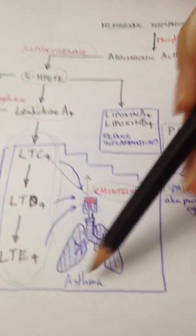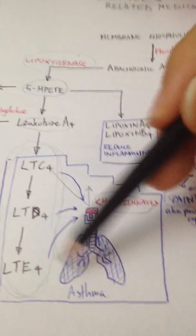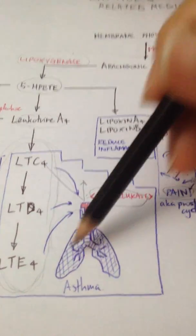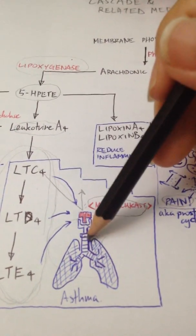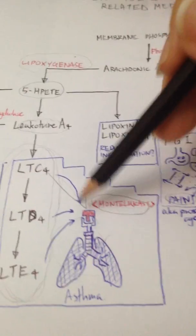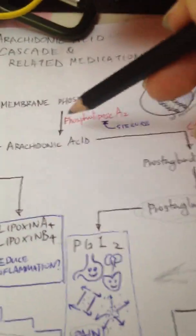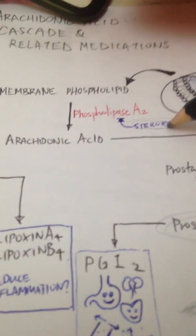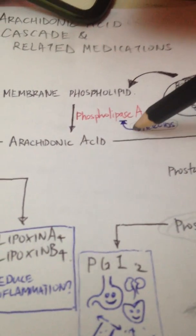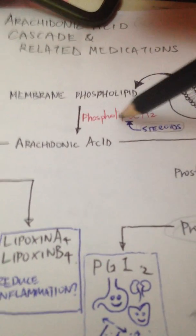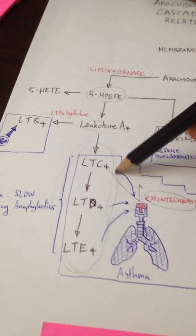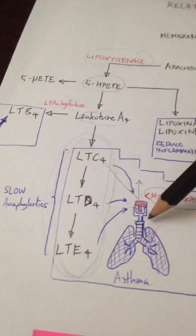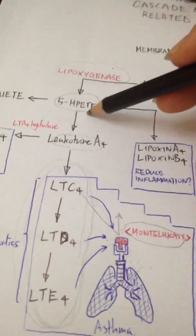Steroids would reduce inflammation in the bronchus. Steroids actually work by going back all the way here. They prevent one of the actions. Steroids have a lot of actions, but one action is to reduce the action of this phospholipase A2, and hence you have much less of these leukotrienes that can cause asthma.